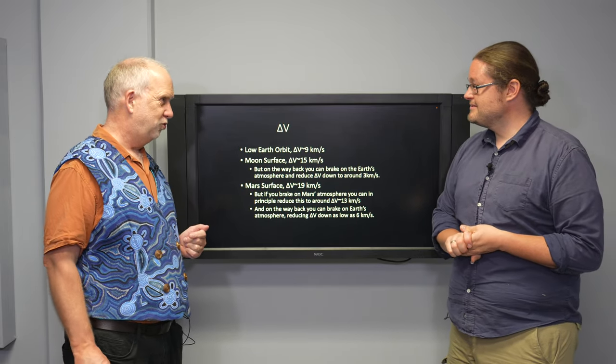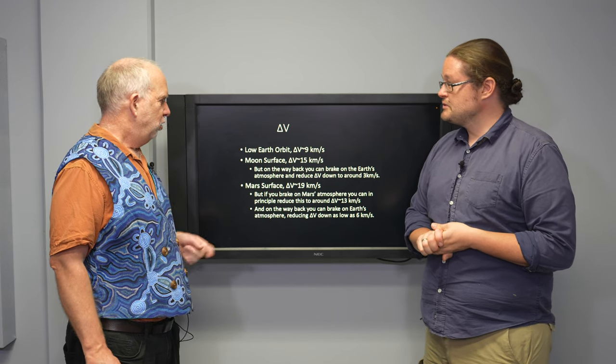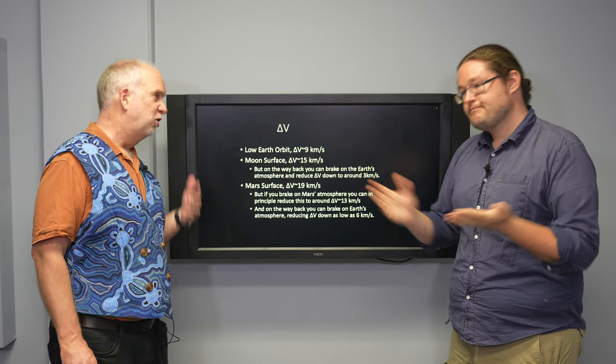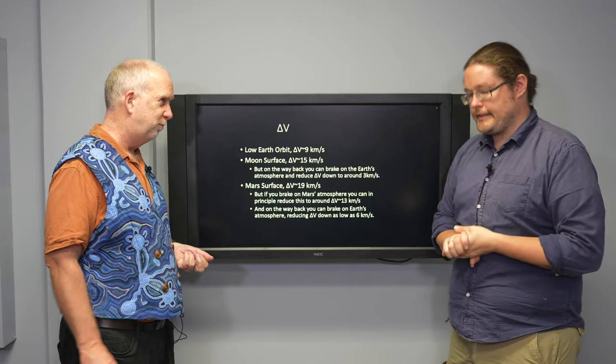So to get to either the Moon or Mars you're going to need a Delta V of about nine kilometers a second to get to a low Earth orbit. That's what we're using at the moment to get to the International Space Station.